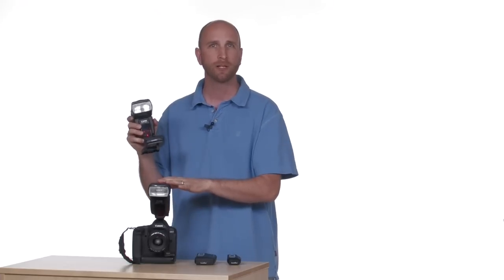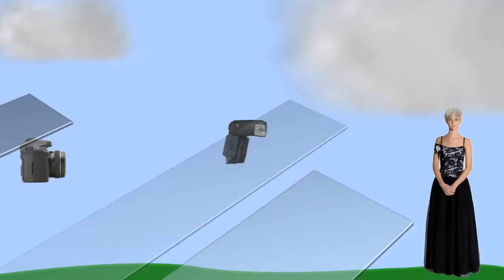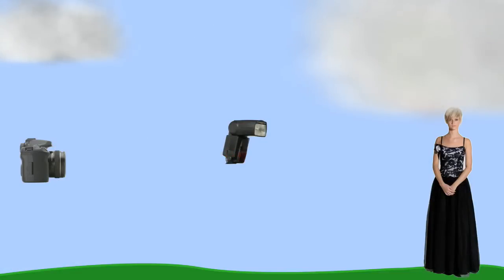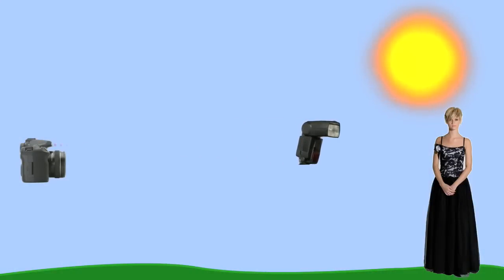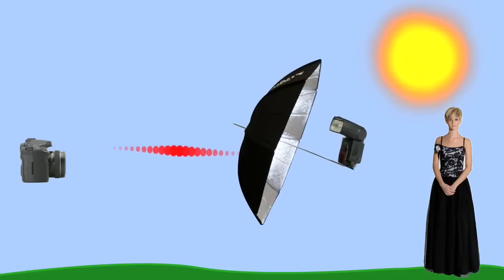First, we can move our flash from our camera to any location we want. And because our flash isn't on our camera, we can use light modifiers like softboxes and umbrellas. Normal remote systems use light to transmit and receive signals. This means that the camera and flash have to be able to see each other. This can be an issue when shooting outside, because the sun can wash out the signal. This also limits the distance that you can shoot, since the signal diminishes the farther it gets from the camera. This also means that you can't have anything between the camera and the flash. If the signal is obstructed, the flash won't fire.